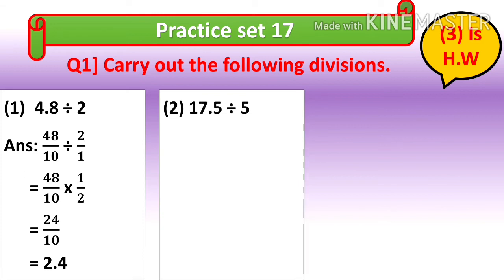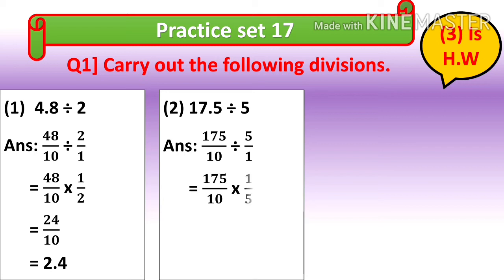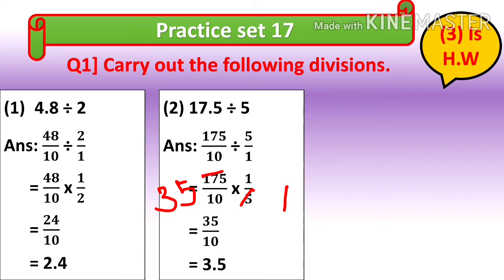Now we will take the second sum: 17.5 divided by 5. Convert 17.5 into fraction, that is 175 upon 10, divide by 5 upon 1. So 175 upon 10 divided converts into multiply, and 5 upon 1 becomes reciprocal 1 upon 5. Calculating: 5×1=5, 5×3=15, giving 25; 5×5=25. So here we get 35 upon 10. The decimal answer is 3.5. Question number 3 is homework.